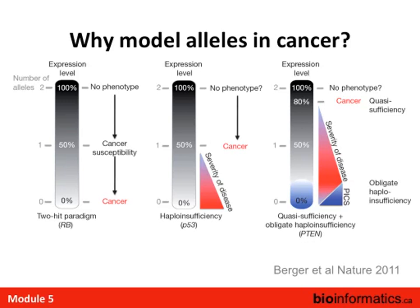Then there's obligate haploinsufficiency, where as copies are lost, disease severity increases until a point where some protein must remain for the cell to survive. So you have to have a little bit of the protein remaining for those cells to function properly; otherwise even the tumor cells will die.